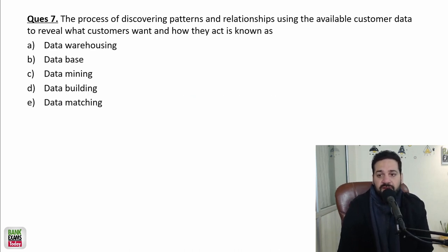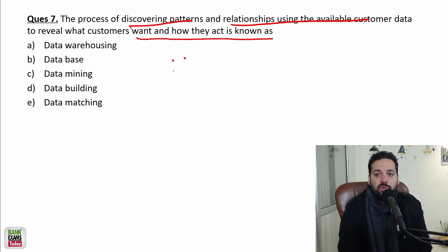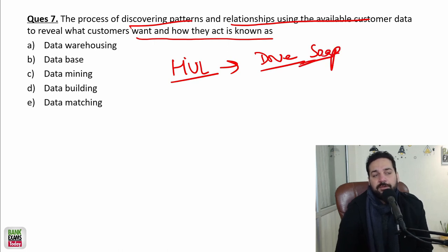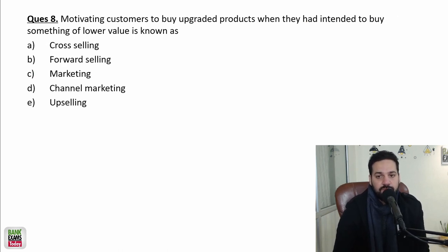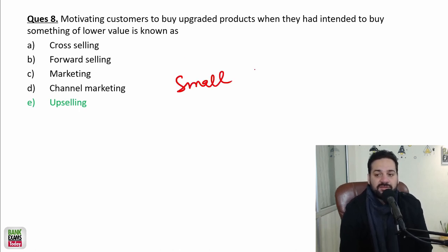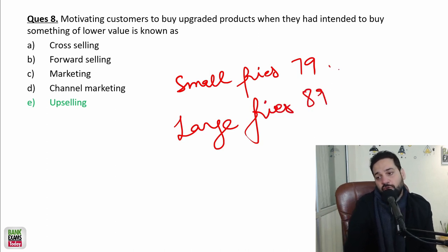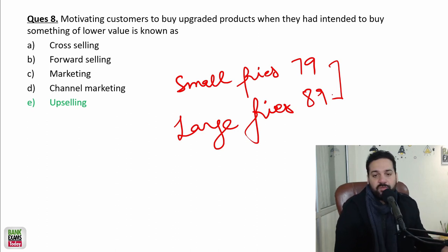The process of discovering patterns and relationships using available customer data to reveal what customers want and how they act — that is data mining. HUL uses data mining to know how much Dove soap they should produce. Motivating customers to buy upgraded products when they have intent to buy something of lower value is up-selling. For example, small fries is 79 rupees but large fries is just 89 — that extra 10 rupees spend is up-selling.